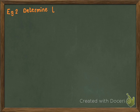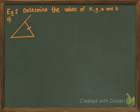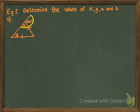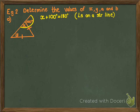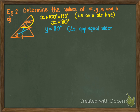Let's look at an example: determine the values of X and Y. We have a triangle with an exterior angle of 100 degrees. The triangle is clearly isosceles because it has two sides labeled equal. X plus 100 equals 180 degrees because of angles on a straight line, so X equals 80 degrees. Since this is an isosceles triangle, Y will also be 80 degrees because X and Y are angles opposite equal sides.